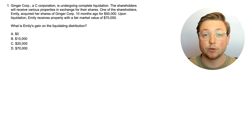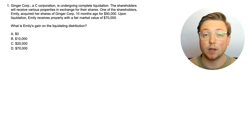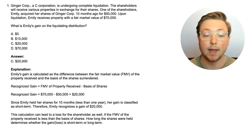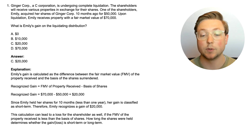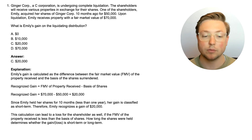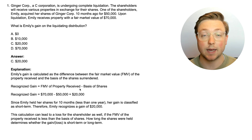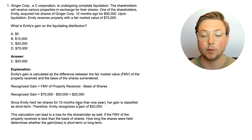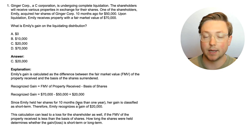This isn't too difficult — it's pretty straightforward. The answer is $20,000. Emily's gain is calculated as the difference between the fair market value of the property received and the basis of the shares surrendered. We take the fair market value of $70,000, subtract her basis of $50,000, and that gives us $20,000 of recognized gain. And since Emily held her shares for 10 months, which is less than a year, her gain is classified as short term.